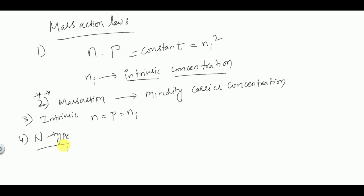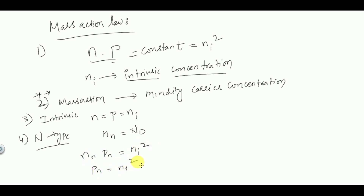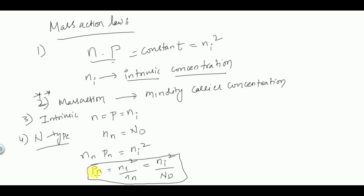In the case of N-type semiconductor, as seen from the law of electrical neutrality, NN equals ND. From the mass action law equation, NN times PN equals NI squared. Therefore, PN equals NI squared divided by NN, which equals NI squared divided by ND. PN represents the hole concentration in N-type semiconductor — holes are minority carriers, so this gives the minority carrier concentration.